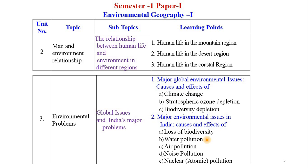The second important pollution is air pollution, which is also a serious problem observed in India. There are several sources of air pollution: industrialization, urbanization, transportation, agricultural operations, mining activities, and various other causes. We will discuss these in detail. Then we also have noise pollution and nuclear pollution, also called atomic pollution. We will discuss in detail what noise pollution and nuclear pollution are, their causes in India, and their impacts.